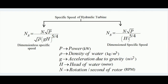Now, what is the significance of this specific speed? Suppose there is a hydroelectric project and we want to implant a turbine. Commonly used hydroelectric turbines are the Pelton wheel (with its various forms), Francis turbine, and Kaplan turbine. To decide which type of turbine should be installed at a particular hydroelectric power project site, specific speed is a very important parameter.